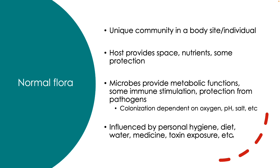Our normal flora also provides some immune stimulation. Some colonization by the normal flora can provide protection from pathogens — basically, if there is no more space for a pathogen to colonize because a member of the normal flora has colonized, that can be very protective for the host. Colonization of any environment is dependent on how that microbe exists in its environment and what conditions it needs — for example, in the gut there are very low oxygen levels, so we tend to see bacteria that are anaerobic or facultative anaerobes.